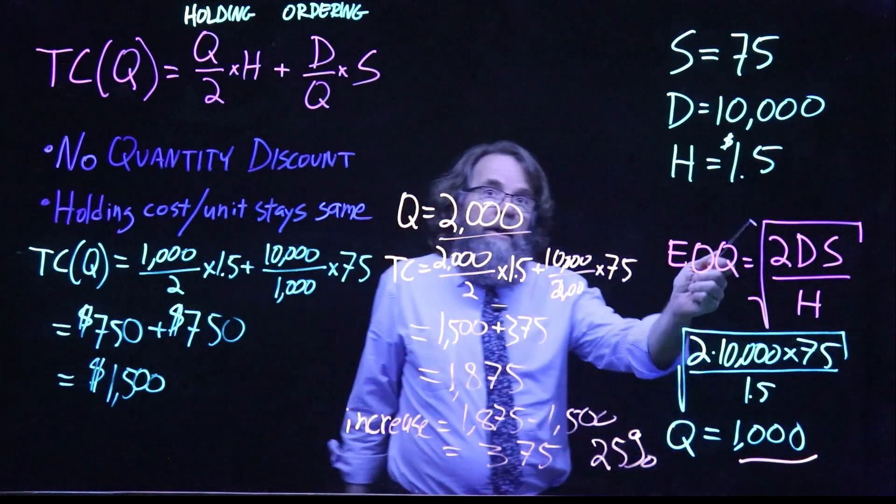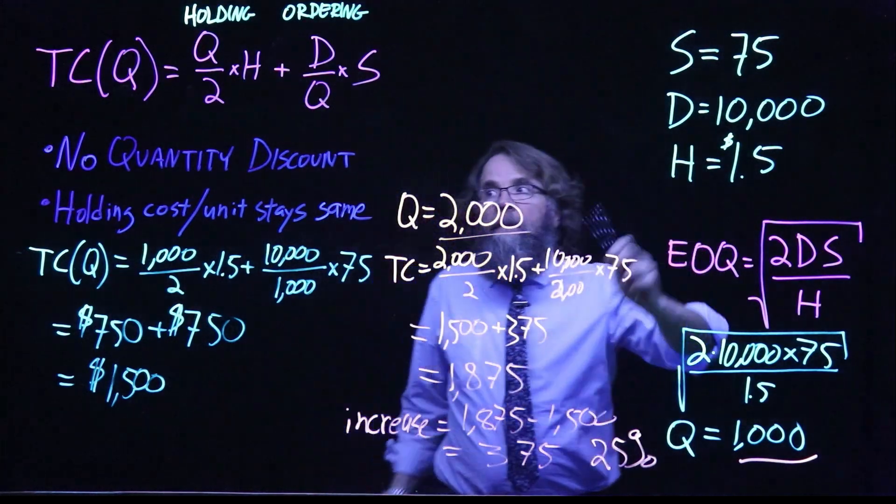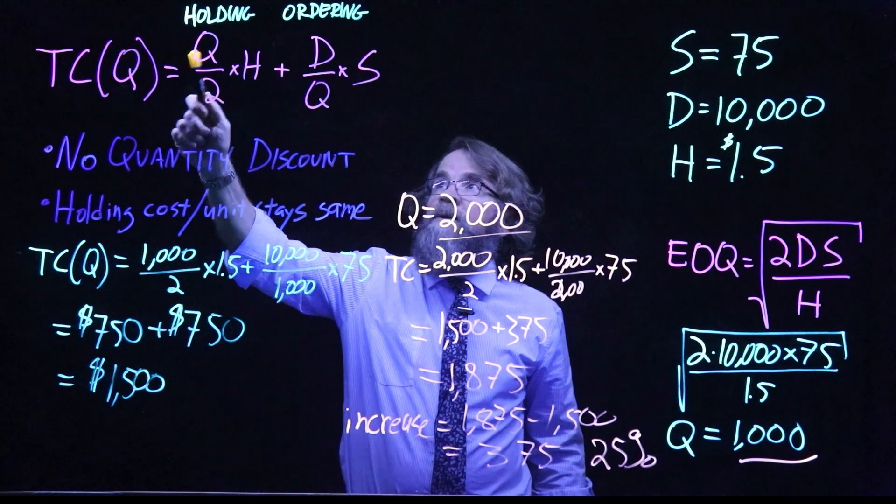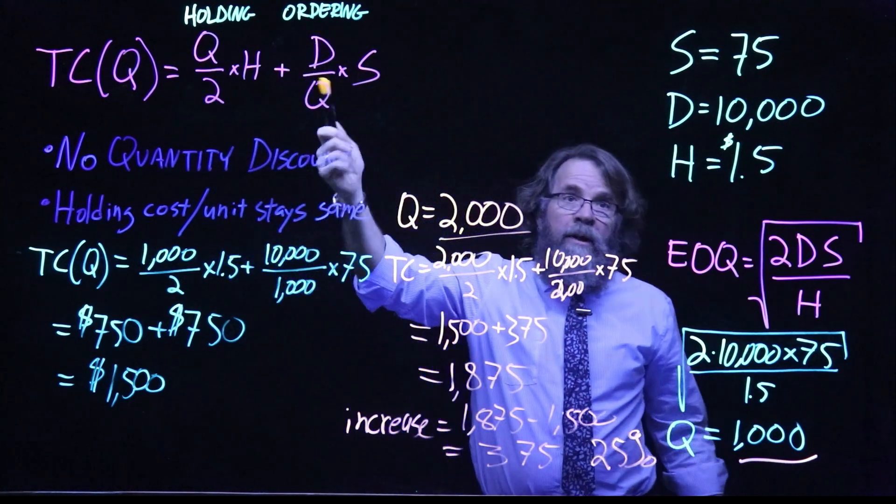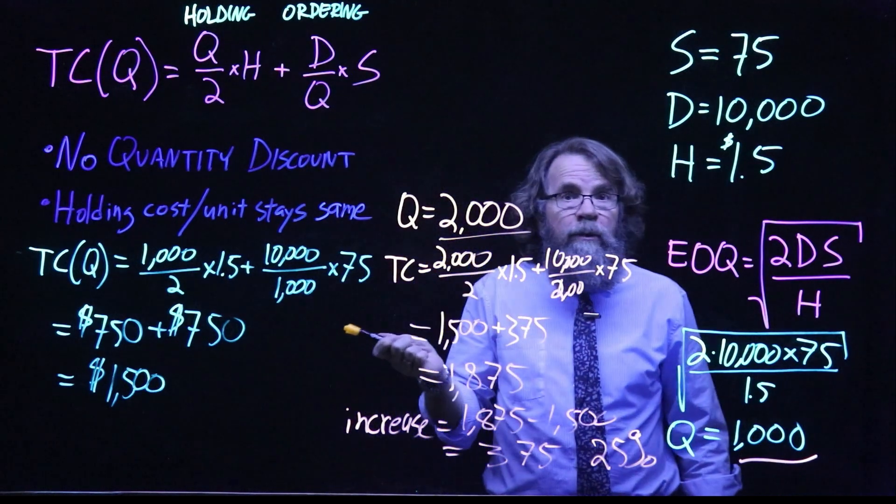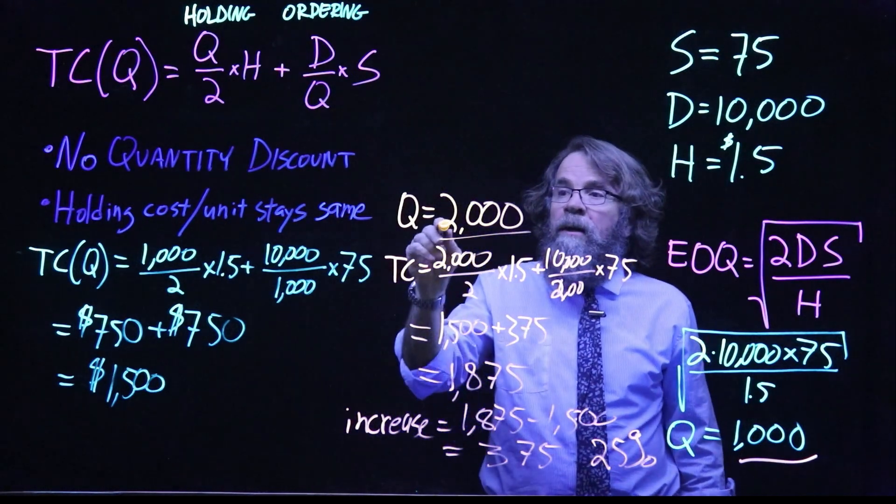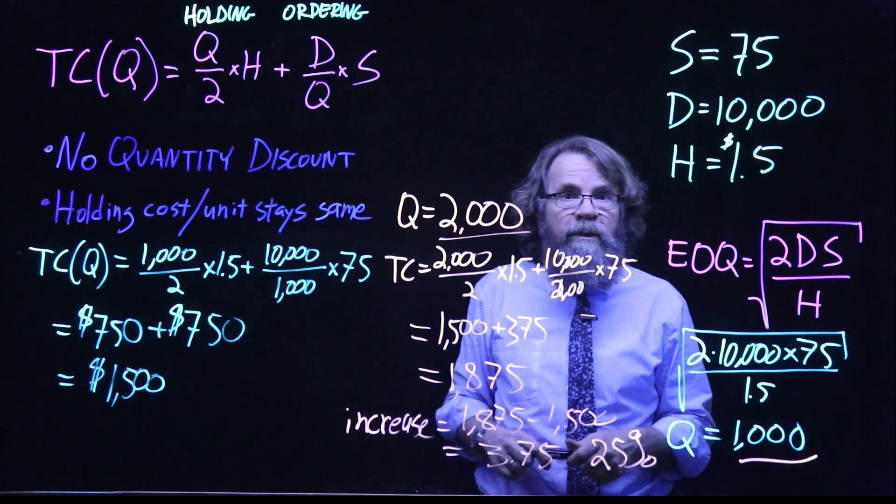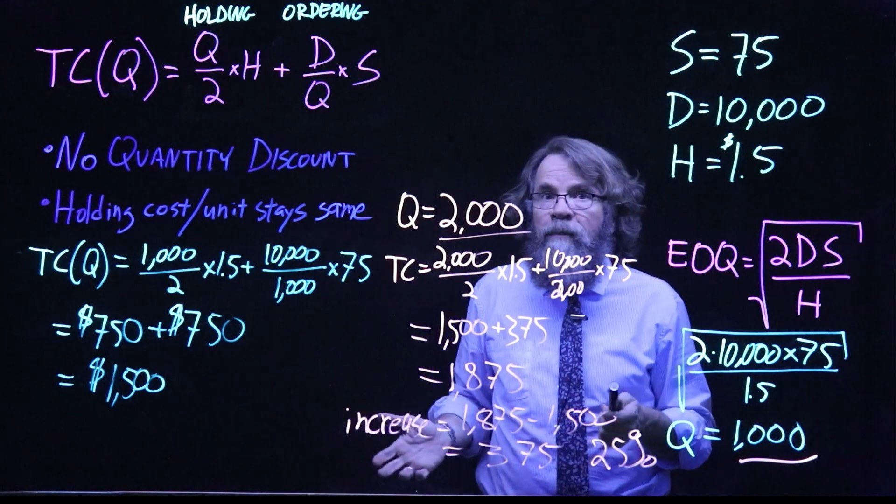So to recap here, we calculated the EOQ. And then we calculated the holding cost for that order size Q, and then the ordering cost for that order size Q. And then just for fun, we also used this same formula to calculate the ordering plus the holding cost for a different order size. I hope this has been helpful.